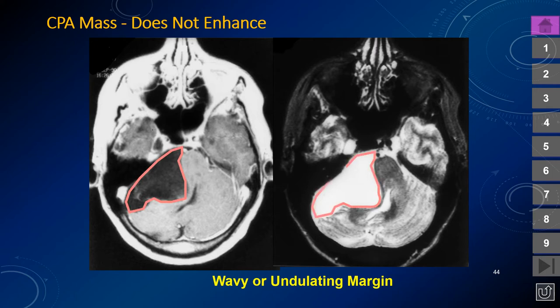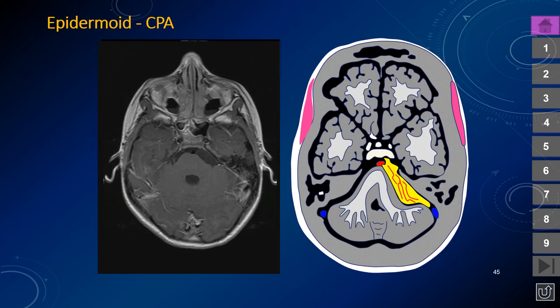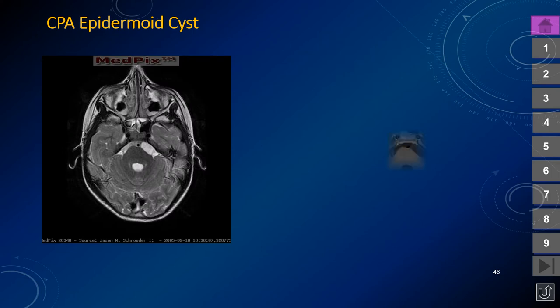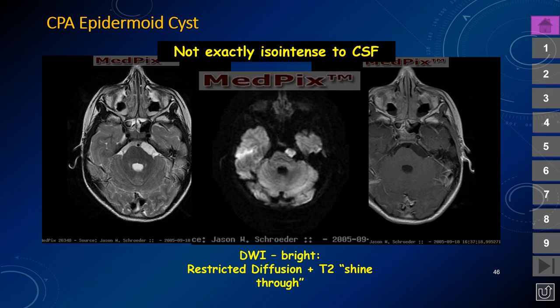Epidermoid inclusion cysts can mimic the attenuation on CT and signal intensity on MR of an arachnoid cyst. But careful inspection should reveal: first, signal intensity nearly but not identical to CSF; second, no contrast enhancement; and third, thin linear wispy structures inside the cyst representing layers of desquamated squamous epithelium. The go-to MR sequence is diffusion-weighted imaging — unlike an arachnoid cyst, epidermoid inclusion cysts have restricted diffusion, appearing very bright on DWI with low signal on the ADC map.